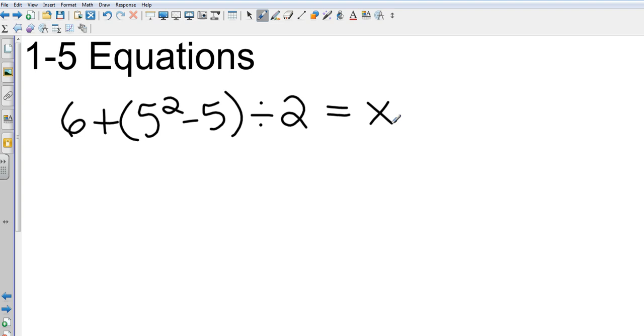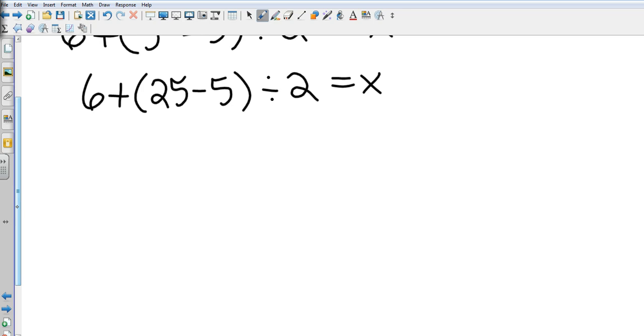Obviously X is by itself so we're not gonna have to manipulate anything, we just need to do order of operations. Order of operations tells me that I should do my parentheses first, so that's going to be 6 plus 25 minus 5 divided by 2. That's going to give me 6 plus 20 divided by 2.